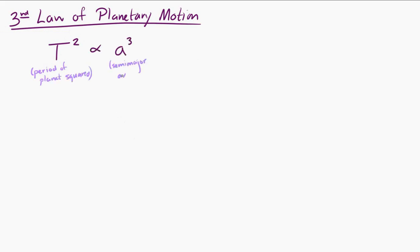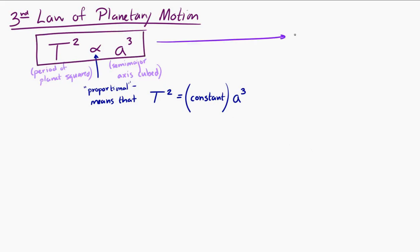And then Kepler's third law of planetary motion is that the period of the planet squared is proportional to the semi-major axis of its orbit cubed. That's a lot of words. Now, proportional really just means that T squared is equal to some constant times the semi-major axis cubed. That's all that proportional means. And we can simplify this for a circular orbit. In a circular orbit, this reduces to the period squared is proportional to the radius of the circular orbit cubed.